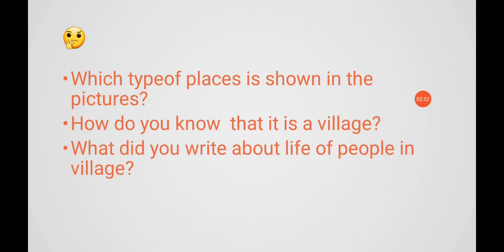Most people in villages do farming. A village has fields ploughed by bullocks or tractors. They have small schools. People mostly live in houses made of mud, stone and straw. They do not have buses or cars — they travel by bullocks and cycles.